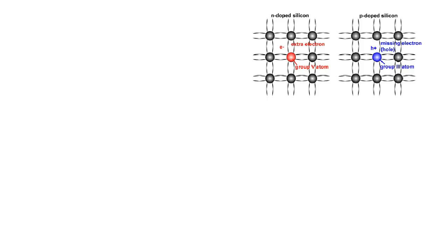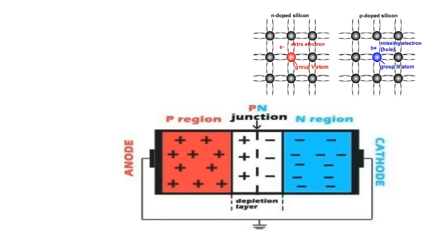Silicon atoms are arranged together in a tightly bound structure. By squeezing small quantities of other elements into this structure, two different types of silicon layers are created: N-type silicon which has extra electrons, and P-type silicon which has missing electrons, leaving holes in their place.